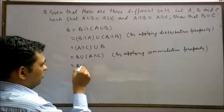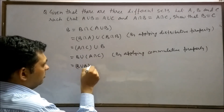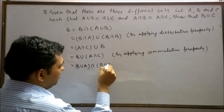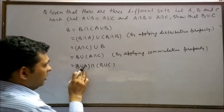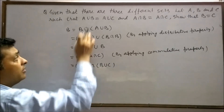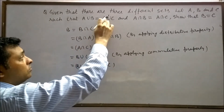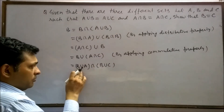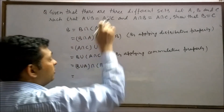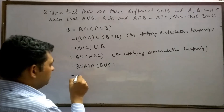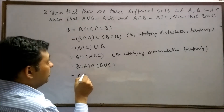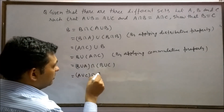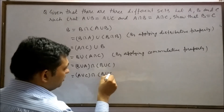We have B union A intersection C. Here, B union A is equal to A union C. So we replace B union A by A union C.